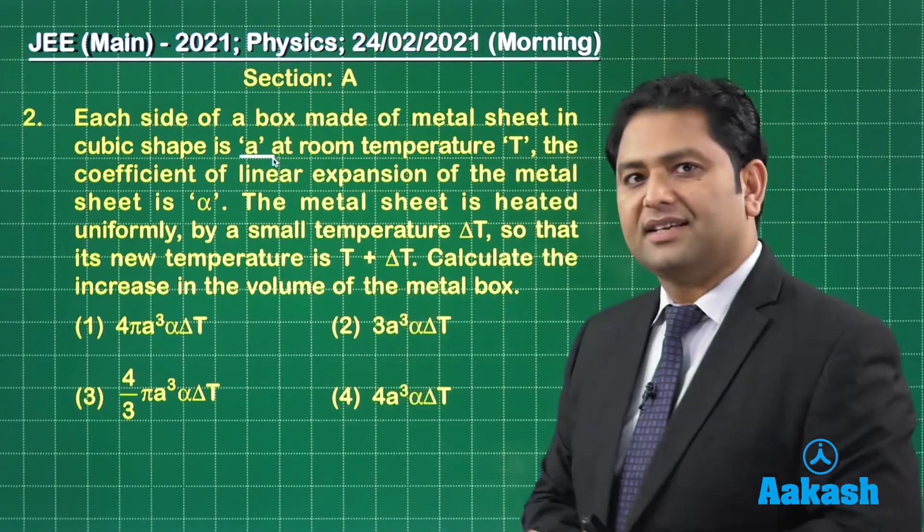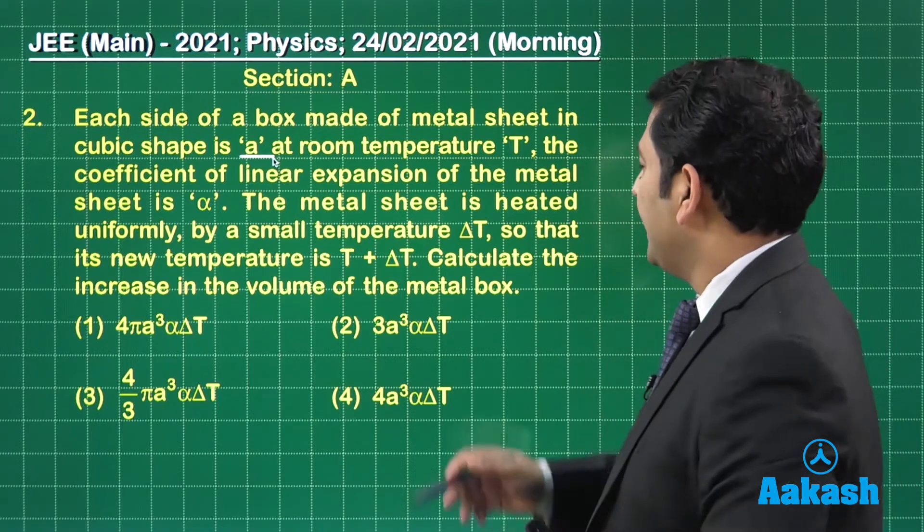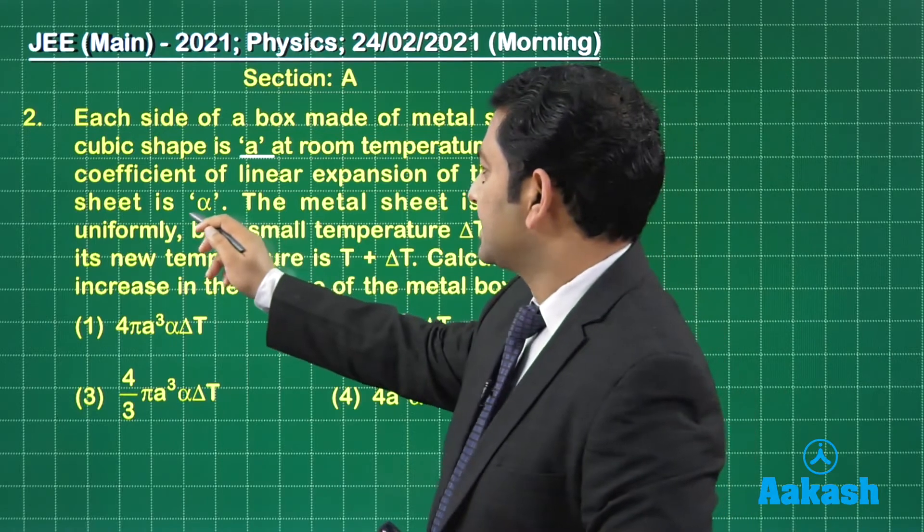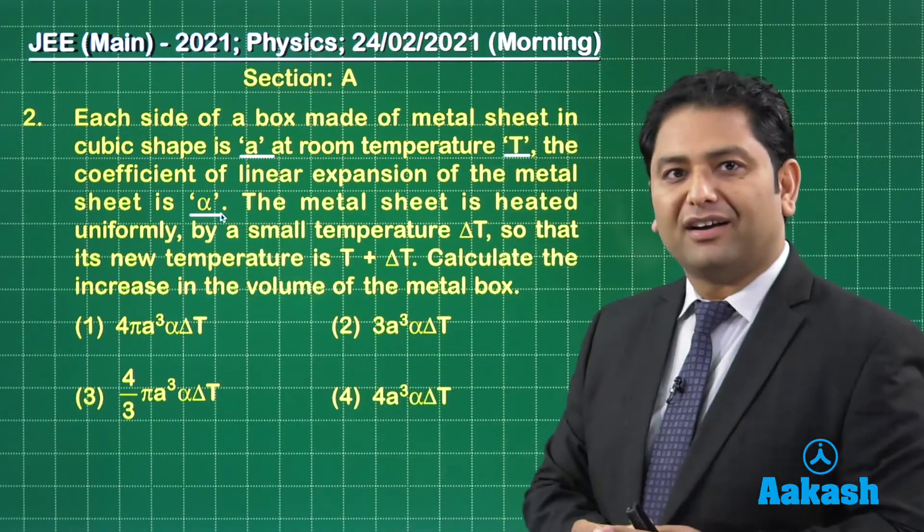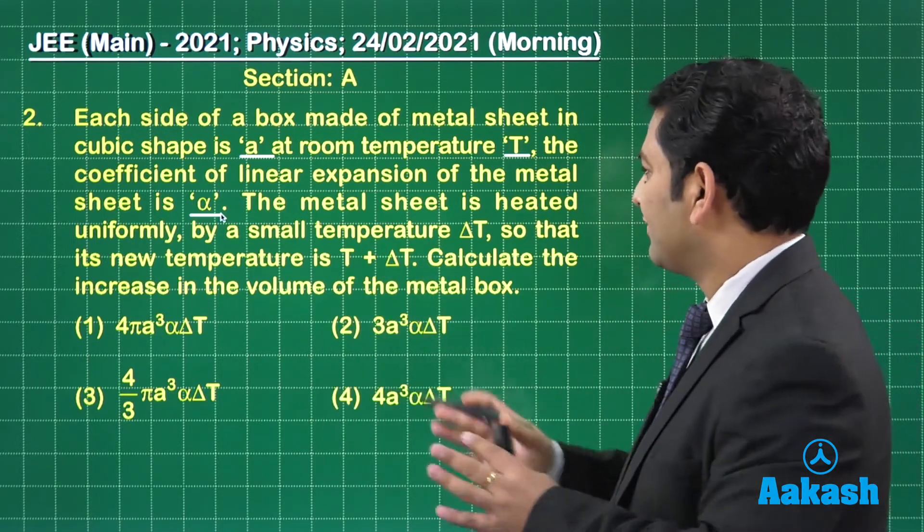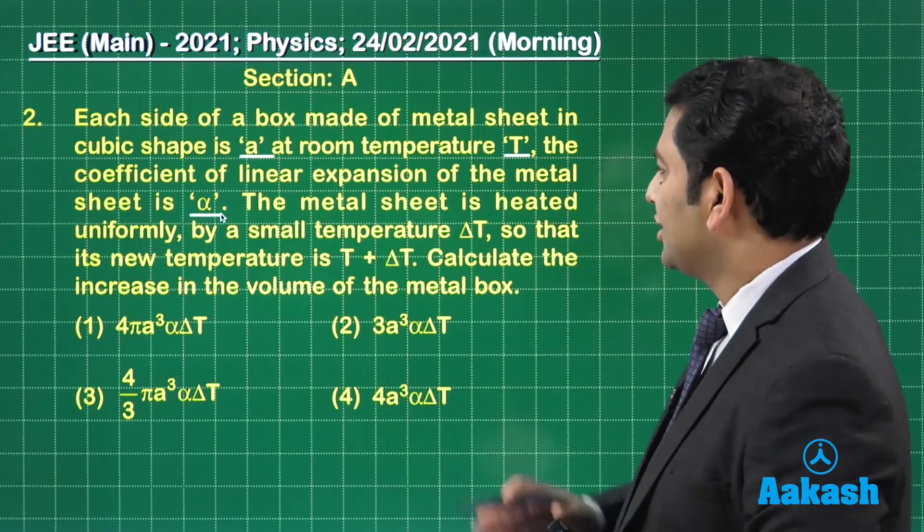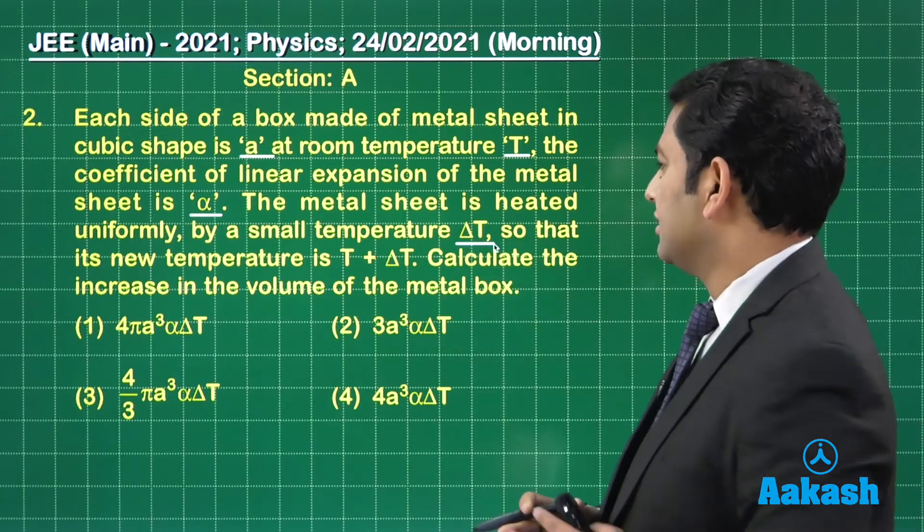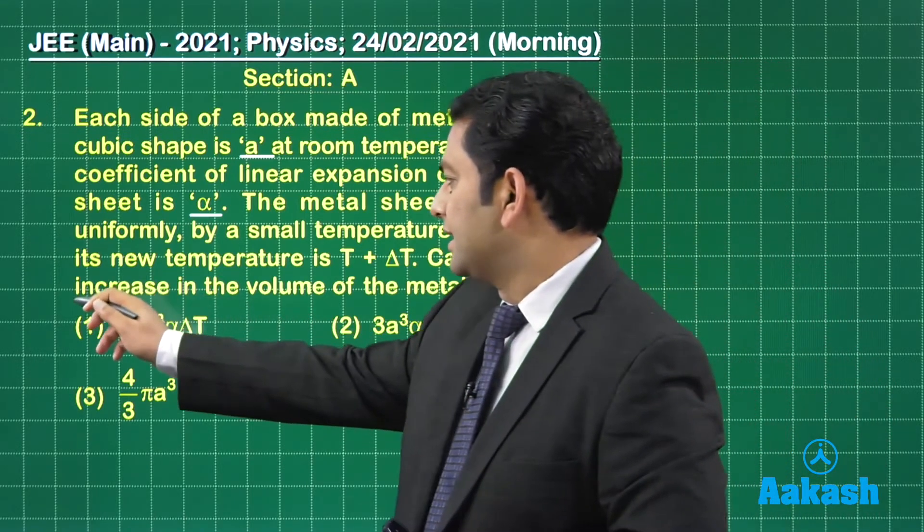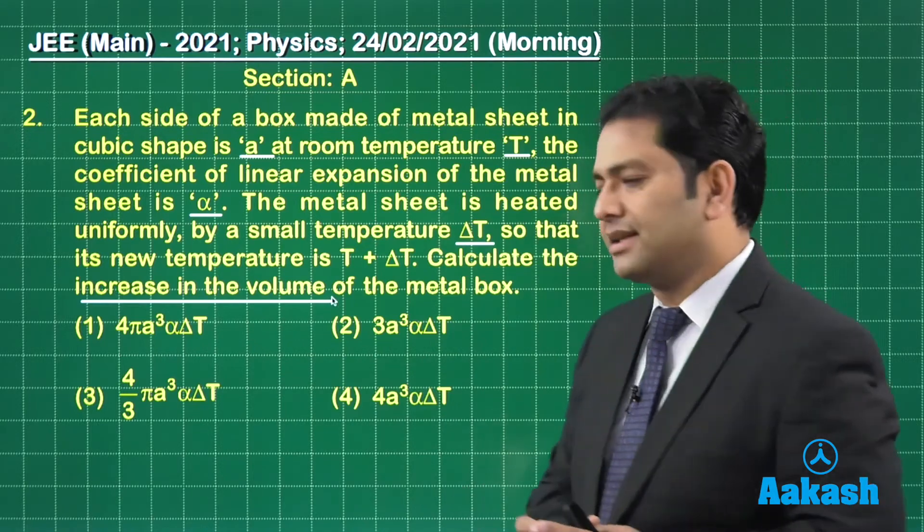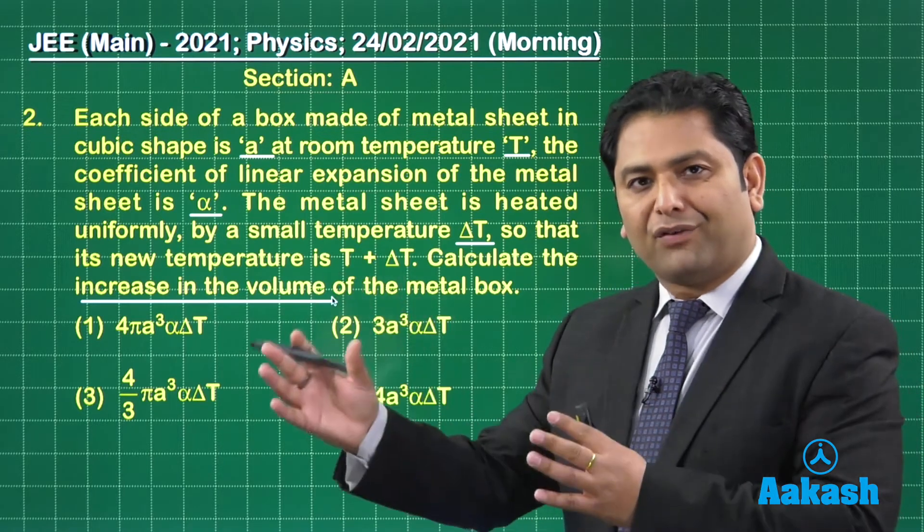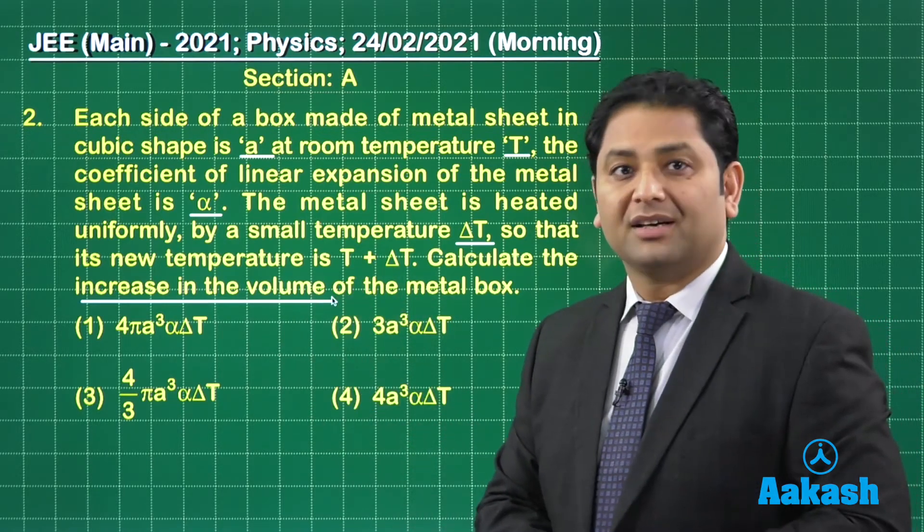Each side of a box made of metal sheet in cube shape is A. So small a is the size of the cube and it is at room temperature capital T. The coefficient of linear expansion that has been given as alpha. So the conventions are as usual. The metal sheet is heated uniformly and the temperature rises by delta T. We got to calculate the increase in volume of that metal box. So if I represent V by volume, delta V is what we are going to find out.